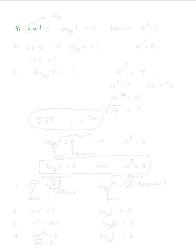Let's try natural logs. ln(1): ln means log base e, where e is the natural number. So this is log base e of 1. We've said it before — log base anything of 1 equals 0, because e to the 0 is 1.